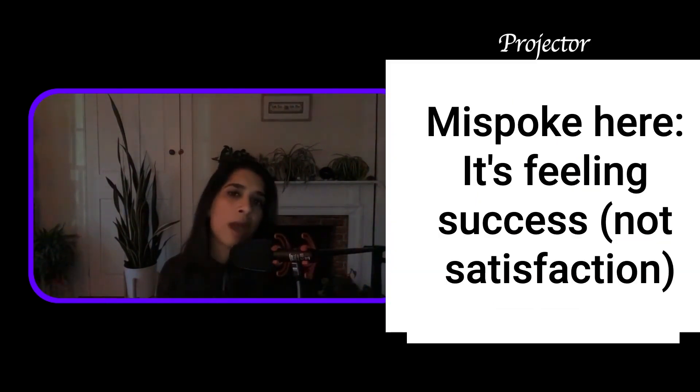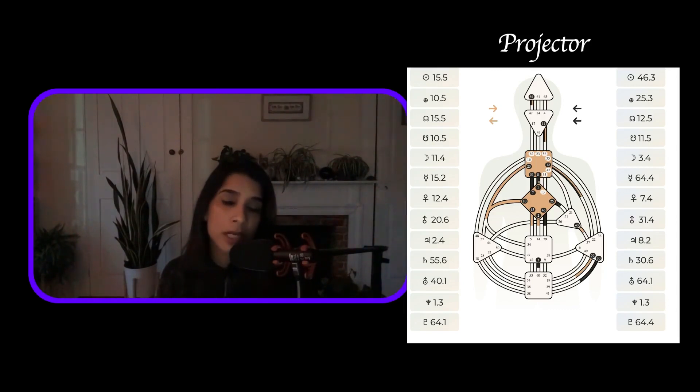So projectors are here to guide. They can see aura types. They are not here to try to keep up with generators. There are three types and that's going to be based off of whether or not they have closed centers open, whether or not they have motor centers below the throat. That's getting a little bit more into specifics. But all projectors have the same not-self, which is bitterness, the same self, which is satisfaction. And they're here to respond to invitation.